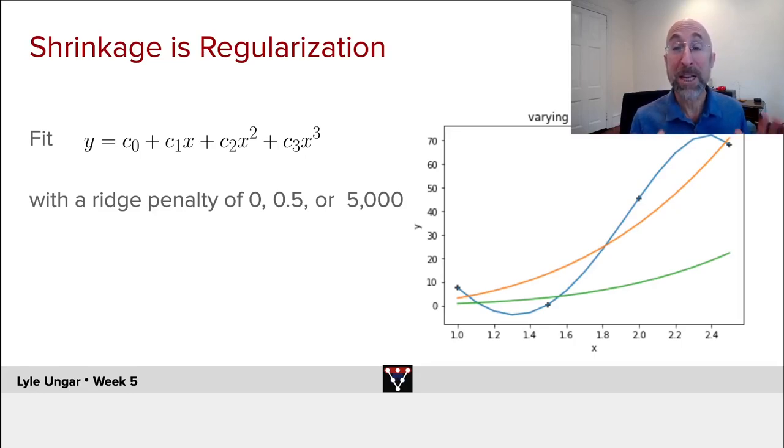If you have big shrinkage, you make the weights much smaller, and the smaller weights give you a green line. In that case, you have high bias. You're tending to always be underestimating the true values of Y.